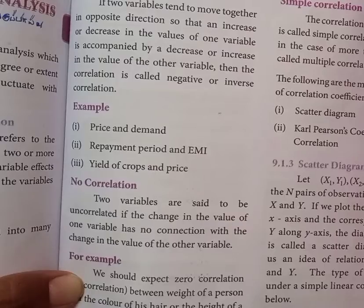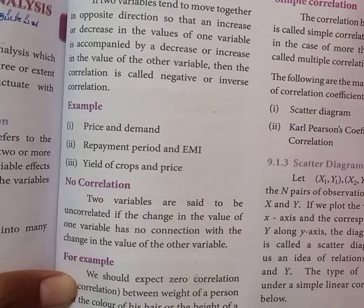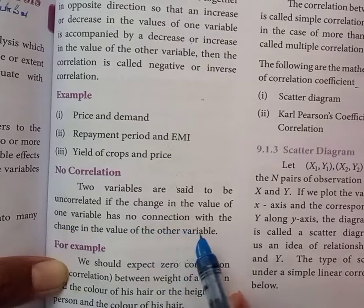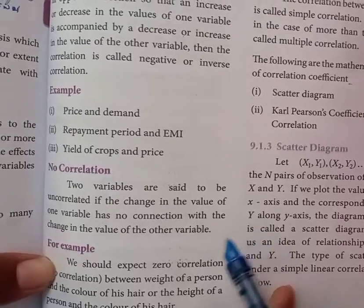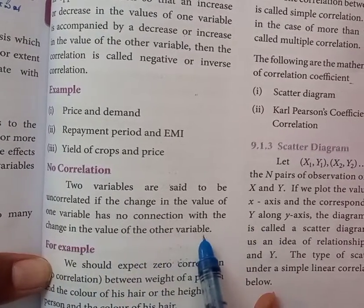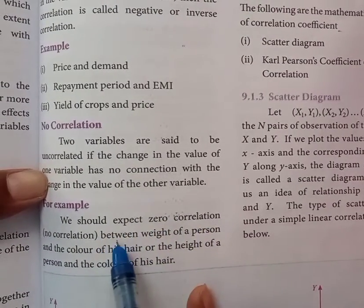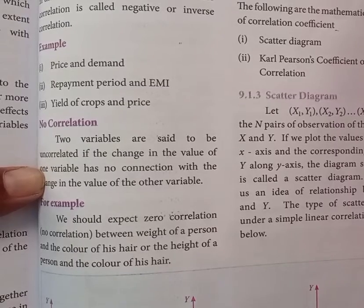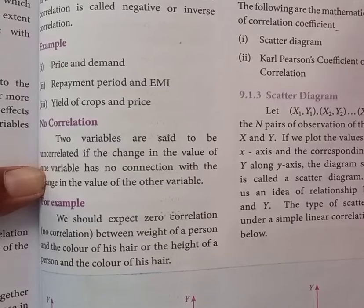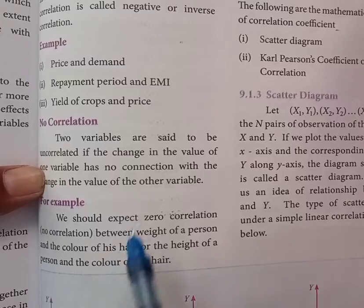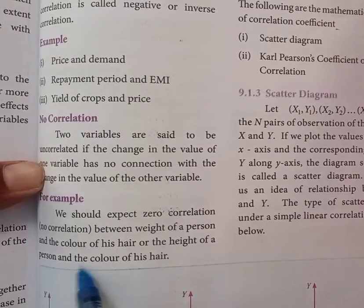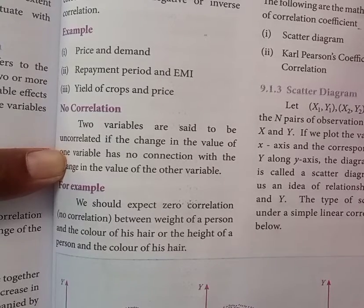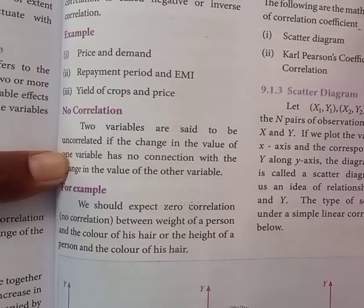No correlation or zero correlation: if one value increases or decreases but has no connection with the change in the other variable, the two variables are said to be uncorrelated. For example, the height of a person and the color of his hair — if a person's height increases, the hair color does not change. There is zero correlation between these two variables.